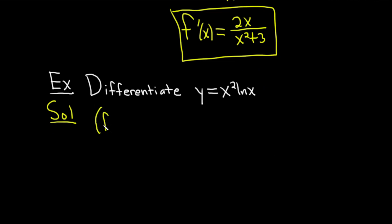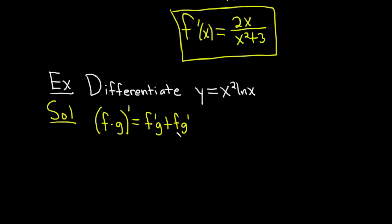The product rule says: if you have a function f multiplied by a function g and you want the derivative, think of f as your first function and g as your second. It's the derivative of the first times the second, plus the first times the derivative of the second — f prime g plus f g prime. In this problem, the first function is x squared and the second is the natural log of x.